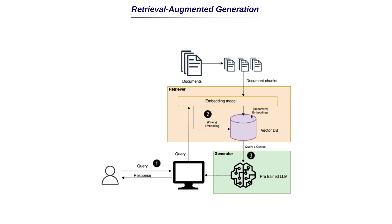Once we have the vector embeddings, we save them into a vector database. The user query is also fed to the embedding model and converted into a vector embedding. So you are chunking the document and embedding those chunks, and you are also converting the query into a vector embedding. Once we have both, we perform a similarity search or nearest neighbor search to find the closest matching chunk. For example, if we have 10 chunks, a similarity search might identify that chunk 8 is the best match for the user's query — and that chunk is then fed to the LLM.